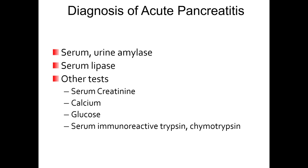To diagnose acute pancreatitis, we measure serum or urine amylase levels, which would be elevated. Serum lipase levels would also be higher. Other tests include serum creatinine, calcium, glucose, and serum immunoreactive trypsin or chymotrypsin.